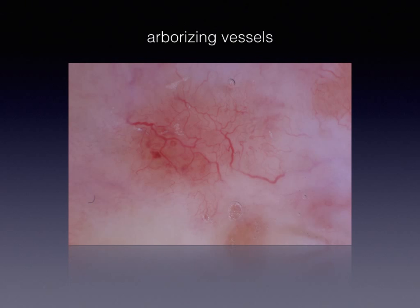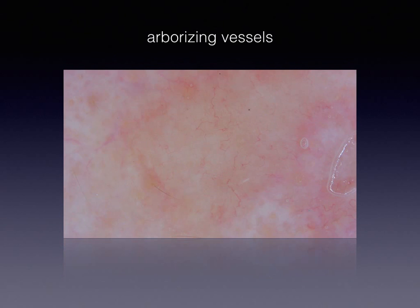Here is another example of typical arborizing vessels. However, in the real clinical setting, as in real life, deviations from the perfect pattern are very common, and below you can see some representative examples. The vessels of this basal cell carcinoma are far from stem large diameter vessels; however, there is no doubt that they are linear in morphology and branching.